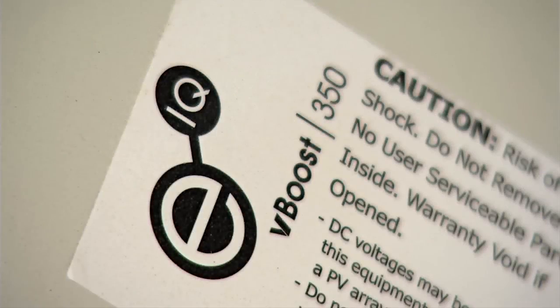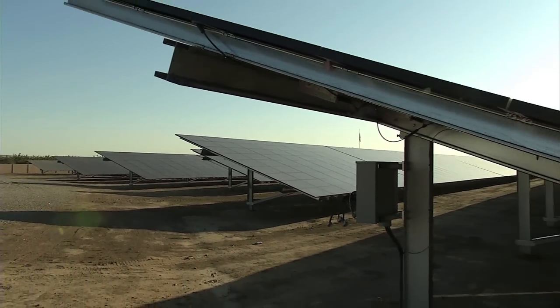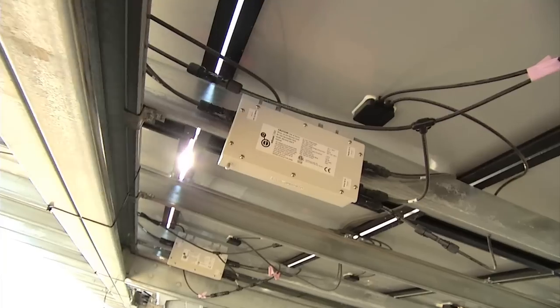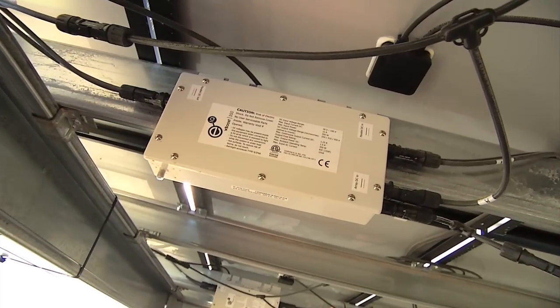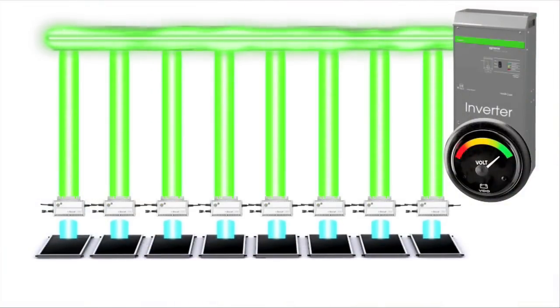EIQ's VBoost technology changes all of this by enabling parallel architecture, which resolves these design limitations. The VBoost module takes the voltage from the module and matches it to what the inverter wants by boosting it to a constant DC voltage. Each module becomes its own independent contributor to the array's power bus.